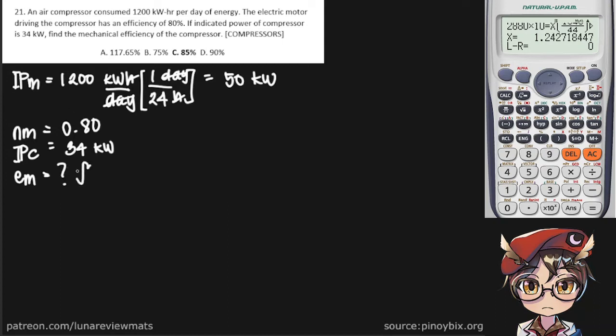First, a bit of drawing. We know this is our motor, which drives a shaft, which drives the compressor. We know that IPM is here, BPM is transferred here, and finally the indicated power of the compressor IPC is here.